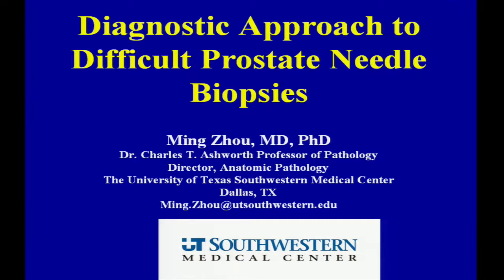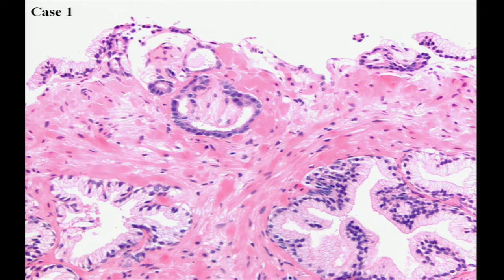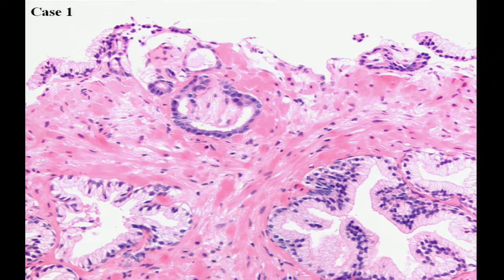I'm going to talk about the diagnostic approach to difficult prostate biopsies. Before we get down to the nitty-gritty of the diagnostic approach, I want to show you several prostate biopsies. They all contain a small focus of atypical glands that may or may not be sufficient for a diagnosis of cancer. As we look at these cases, I want you to think about whether you could make a diagnosis of cancer or not, and why. Then later we're going to come back to look at these cases again.